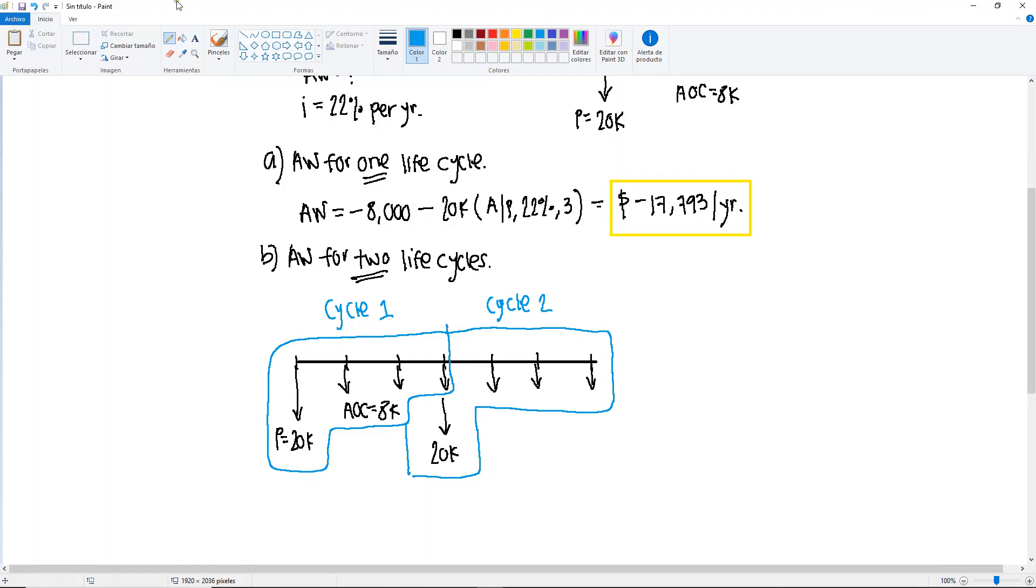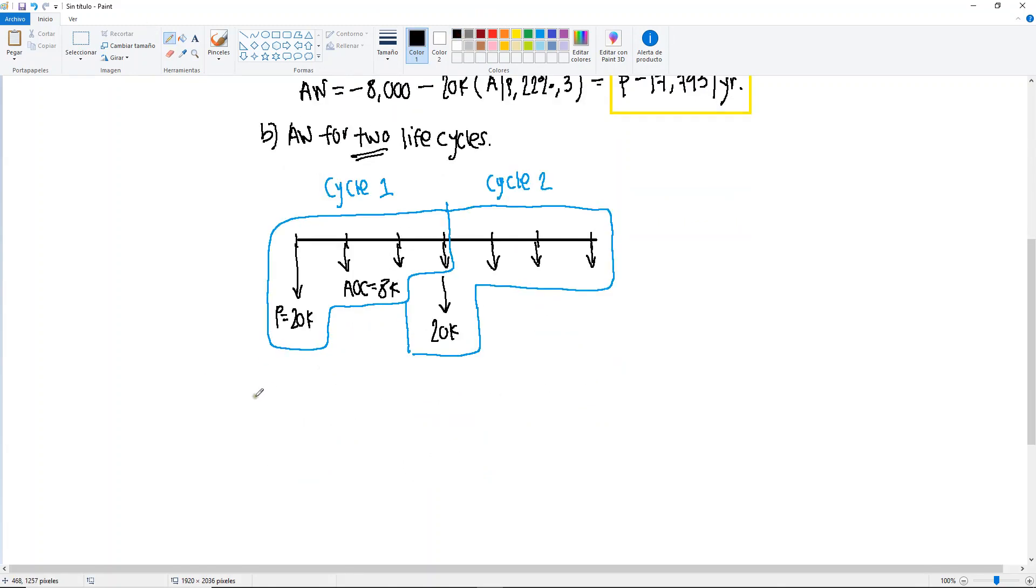Okay, so let's start putting our equation together. Annual worth will be equal to the minus 8,000, which is already in A, so we do not need to worry about that.